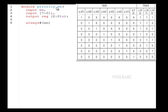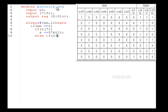In a priority encoder, each bit of the input will have a priority. Coming to the truth table, the MSB bit number seven is the highest priority, and the LSB bit number zero is the least priority. If bit number seven is one, we won't consider the remaining bits - whatever the condition of the remaining bits, all three bits of the output will be one. Likewise, for the least priority bit number zero, if that is one, the remaining input bits should be zero for it to be considered.